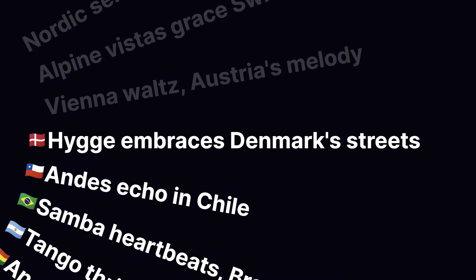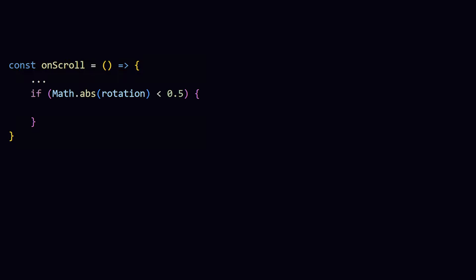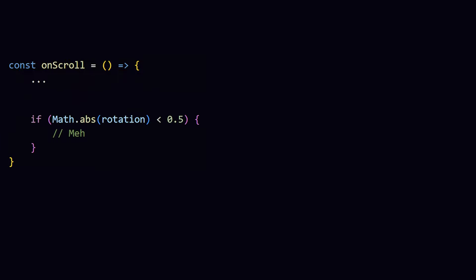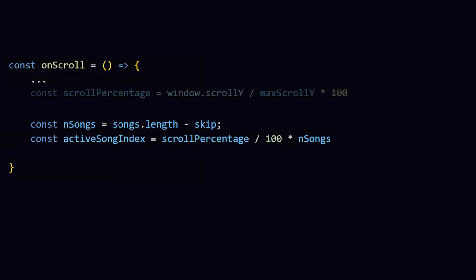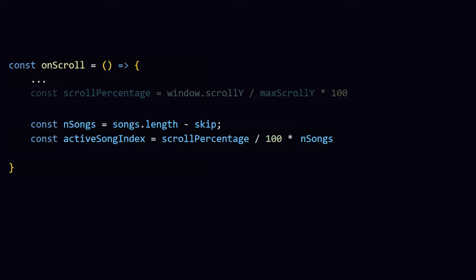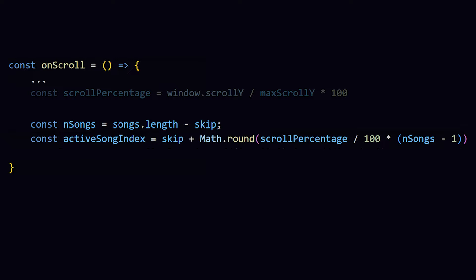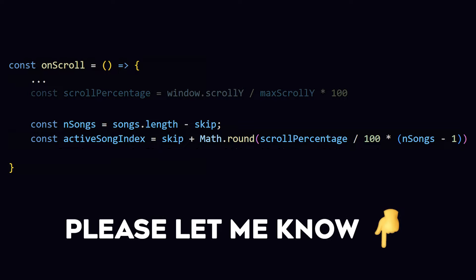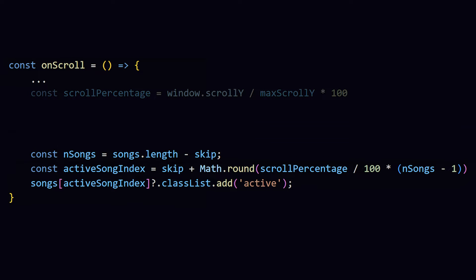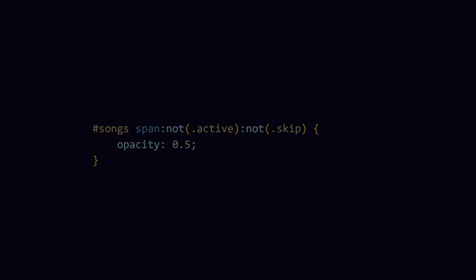We only want to show the flag for the song that's currently in the center — it's JavaScript time again. We could check if the rotation is between two values but let's use the scroll percentage and multiply it by the amount of songs. A 100% scroll percentage would return the last song index, so we subtract one, and we should not start at 0 but at the first song that should not be skipped. I start to wonder how many people will follow all these calculations without having to rewind — please let me know in the comments! Now let's add an active class to the song in the middle and remove it from all the others, making others slightly less opaque so the current song pops out more.